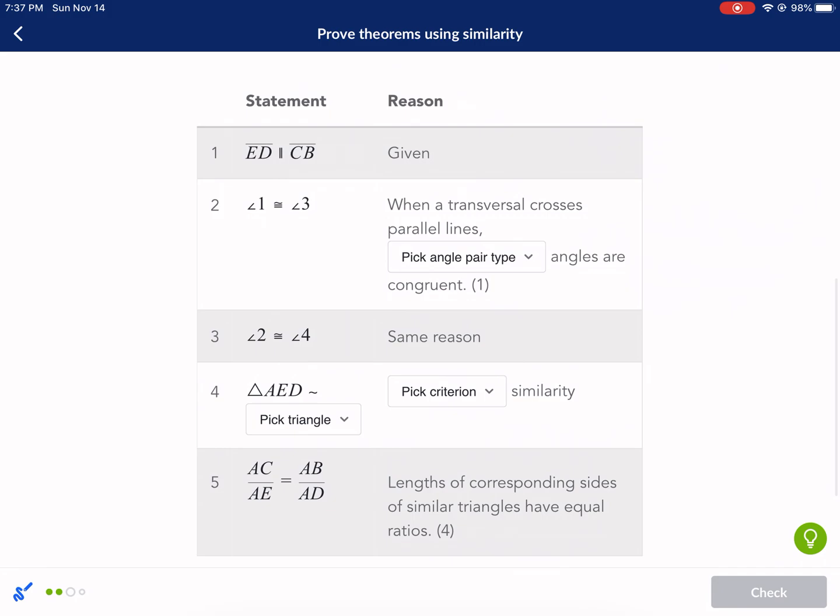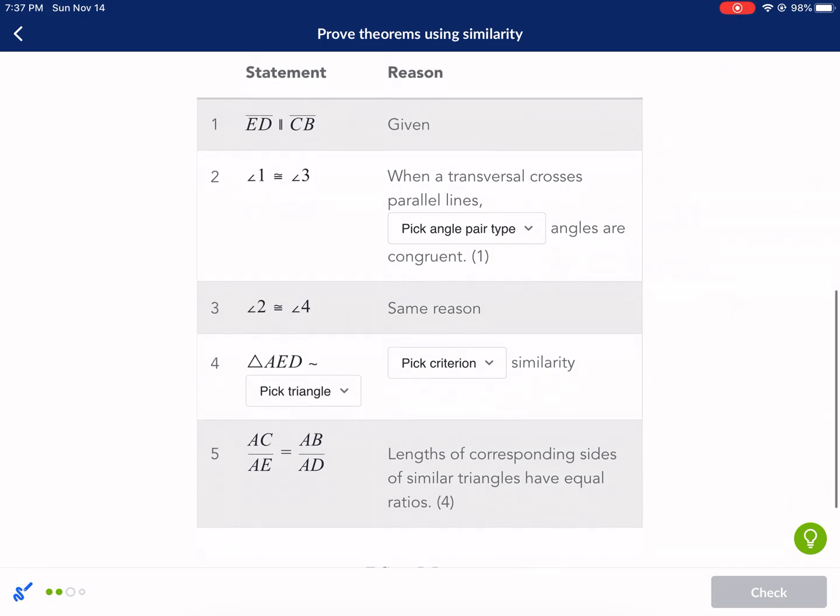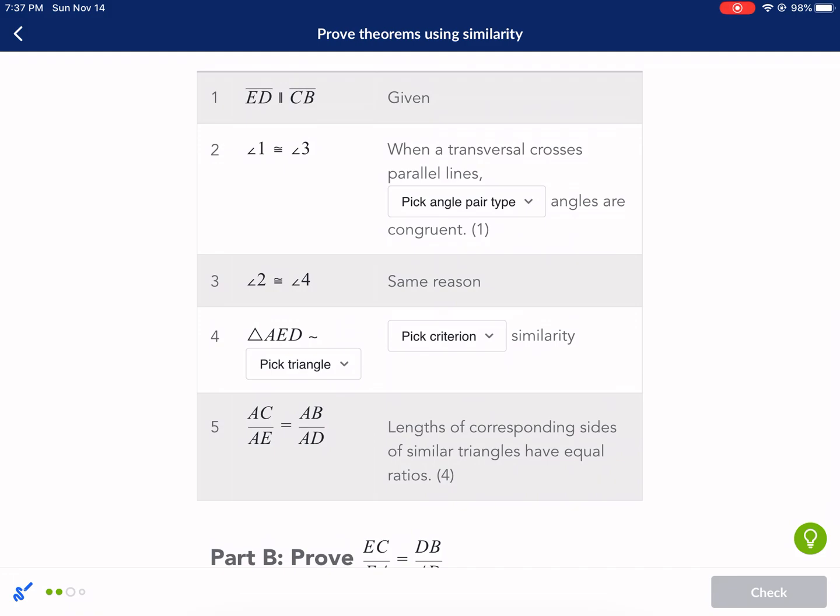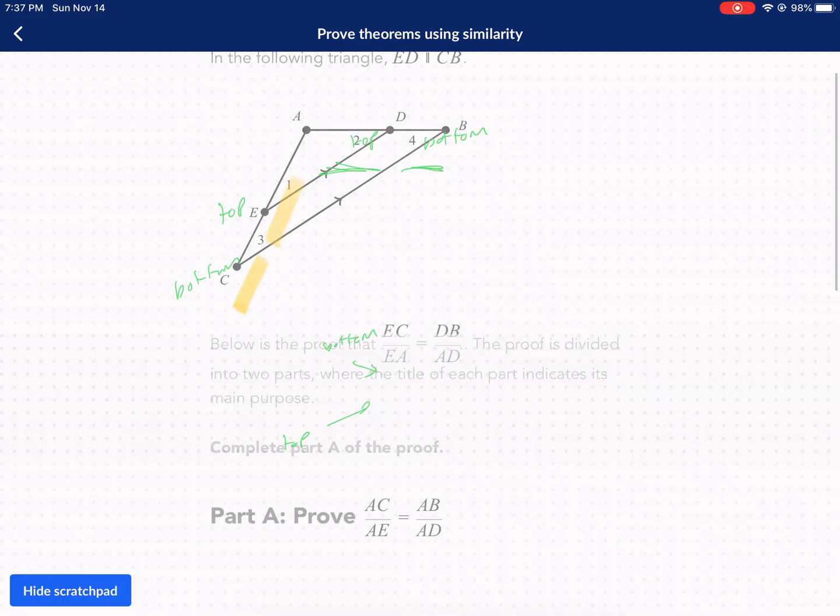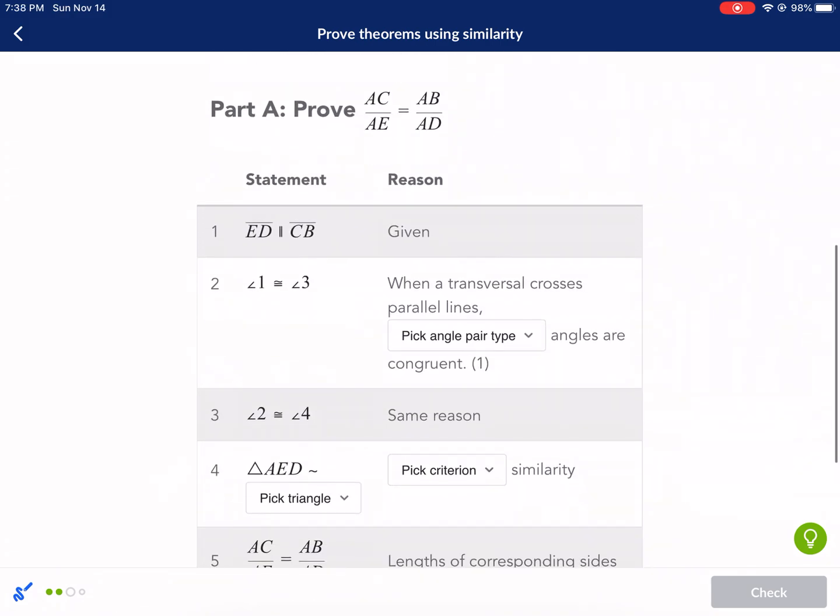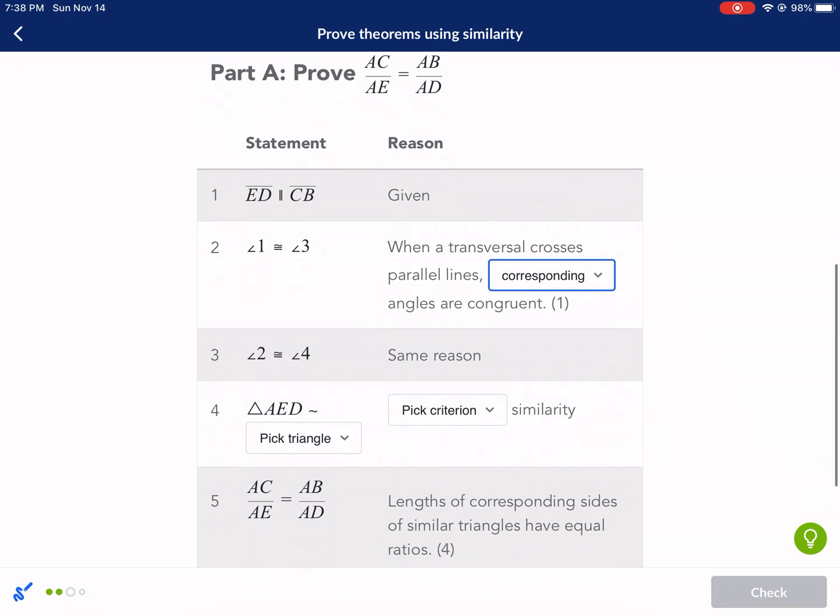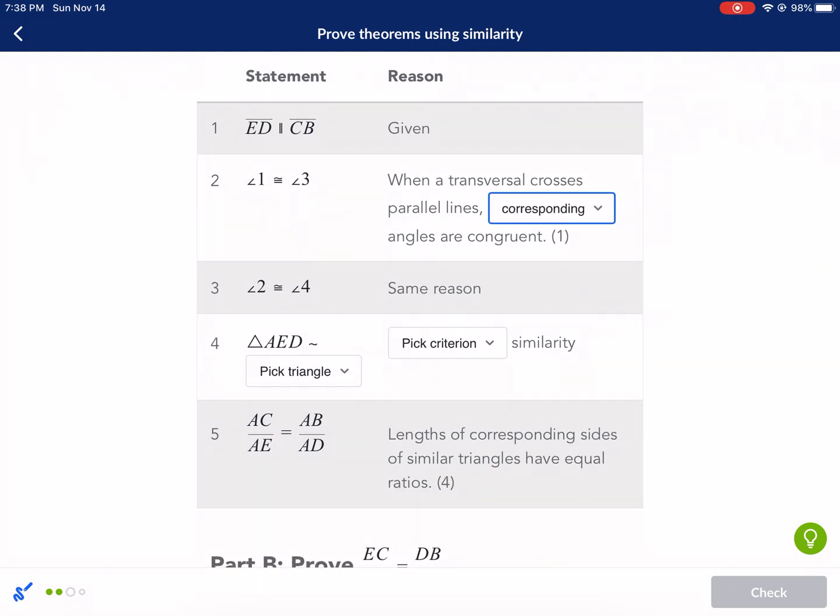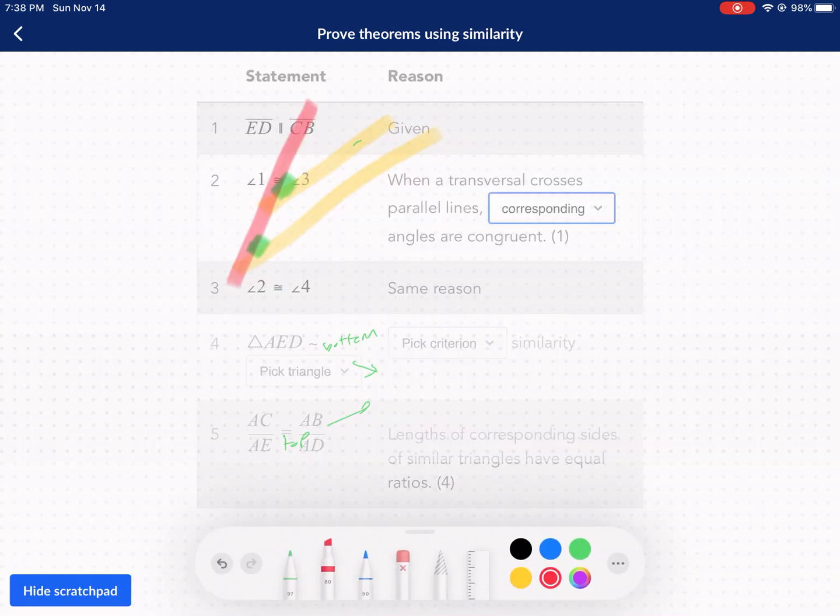ED is parallel to CB given. That's our given. Now we have a congruent sign. So we're going to either put like an angle here or something. When a transversal crosses parallel lines, blank angles are congruent. So we're looking at one and three here. Let me erase some stuff. We're looking at one and three. I already know what this is but I want to highlight to you guys. Here we have these two lines parallel and then one and three are created because we have this transversal here, those are corresponding angles. They're in the same part of the intersection. If you want a brief of that, I have plenty of videos on that, but these are corresponding angles. Now angle two and angle four, the same reason corresponding.